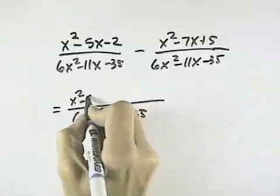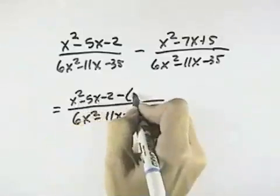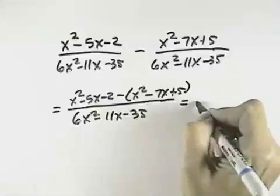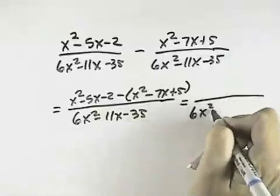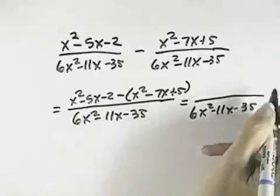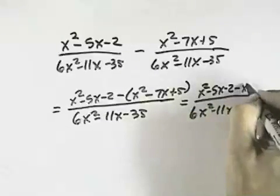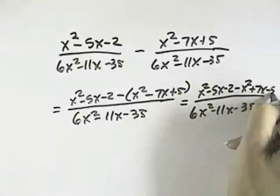So we have the x squared minus 5x minus 2, but we're subtracting the x squared minus 7x plus 5 from that. So over our common denominator, if we distribute that negative sign, we'll have x squared minus 5x minus 2, and then we'll have minus x squared plus 7x minus 5.